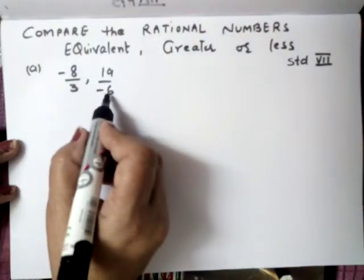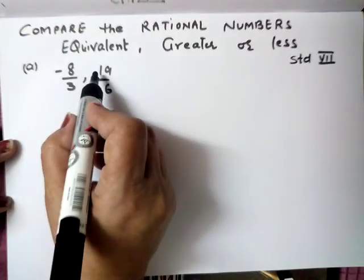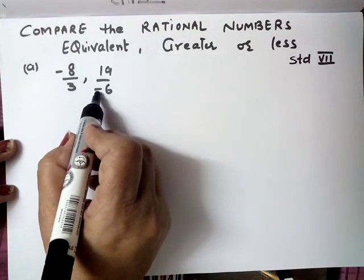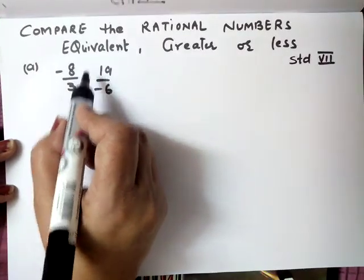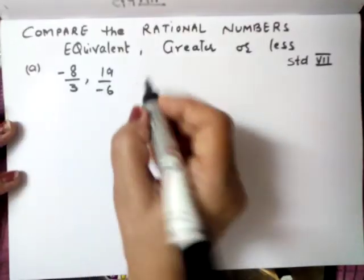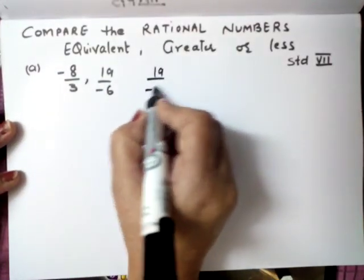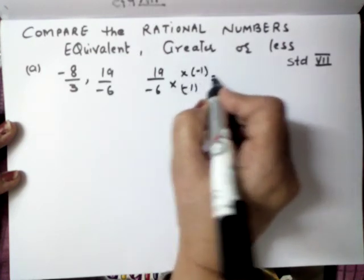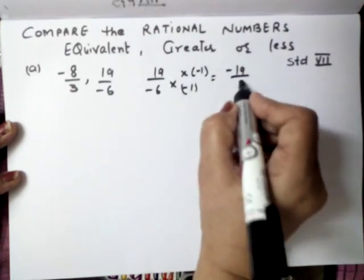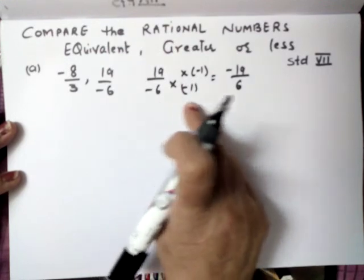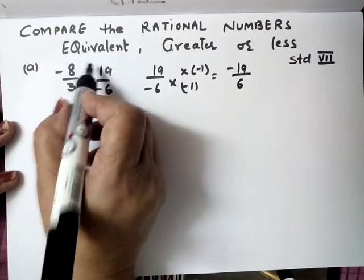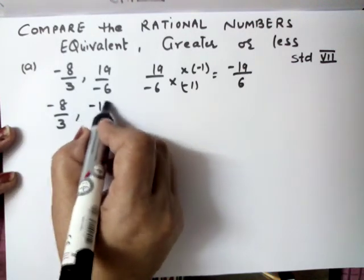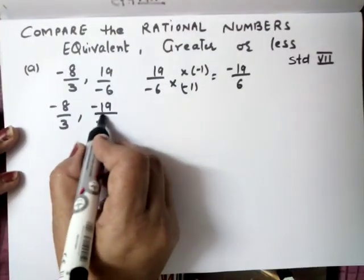Here the denominator is positive — pehle hum isko positive banayenge. Ab upar positive hai, neeche negative hai, toh what you will do: aap directly minus ka sign upar le jao, toh yeh hamara positive ban jayega. Otherwise 19 upon minus 6 ko kya karenge? Minus 1 se multiply karenge, it will be minus 19 upon 6. So there is no need — you can take directly. Toh hamara ho jayega minus 8 upon 3 aur yeh ban jayega minus 19 upon 6.